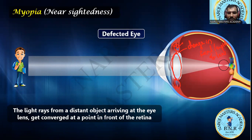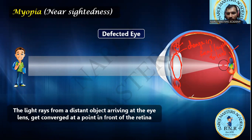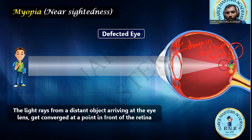Whenever the focal length of the lens changes, automatically the position of the image also changes. And whenever elongation occurs in the eyeball, the position of the converging point of light rays also changes. This means we will not get a clear image on the retina. For a person suffering from myopia, the light rays always converge in front of the retina — before the retina.